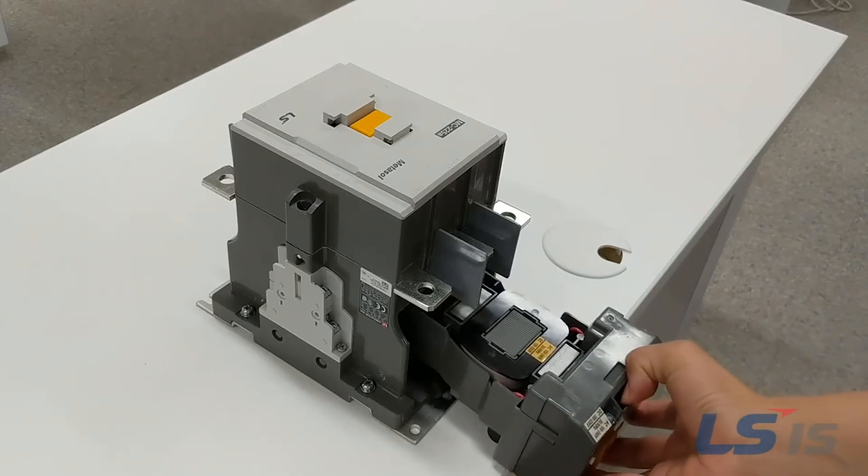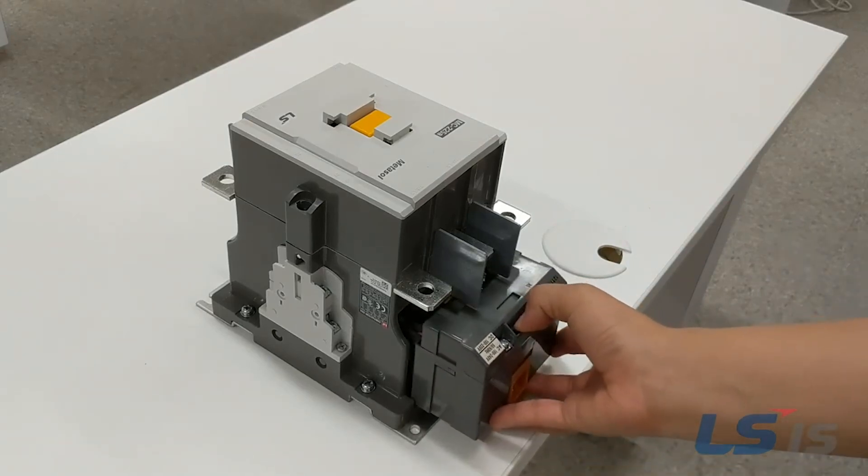To install the new coil, simply slide the replacement coil into the contactor housing and make sure the coil is fully seated.